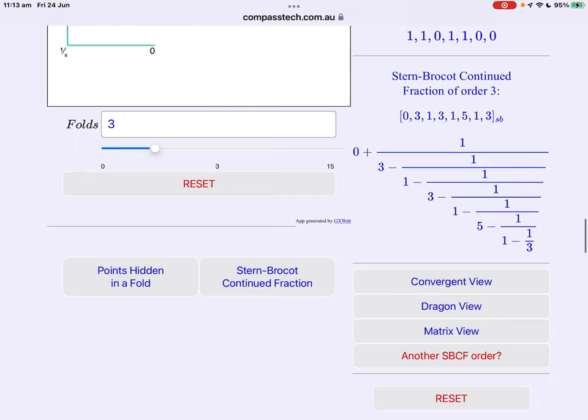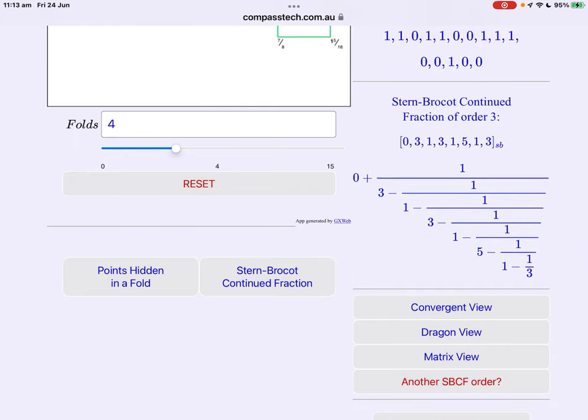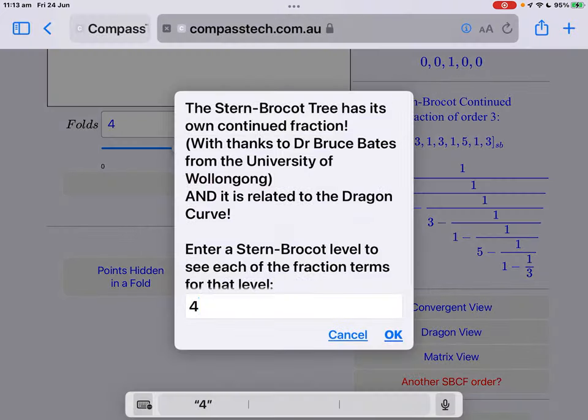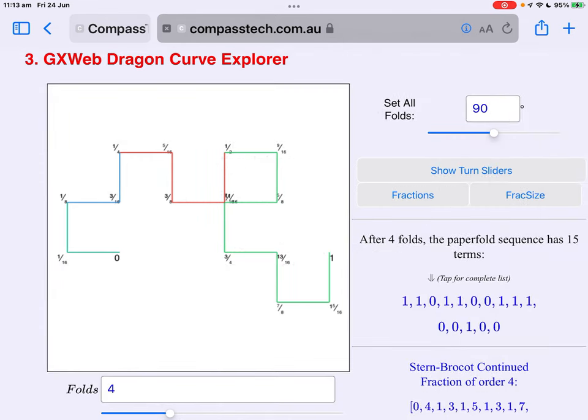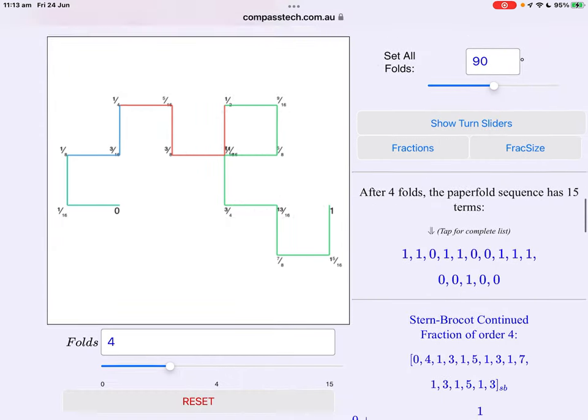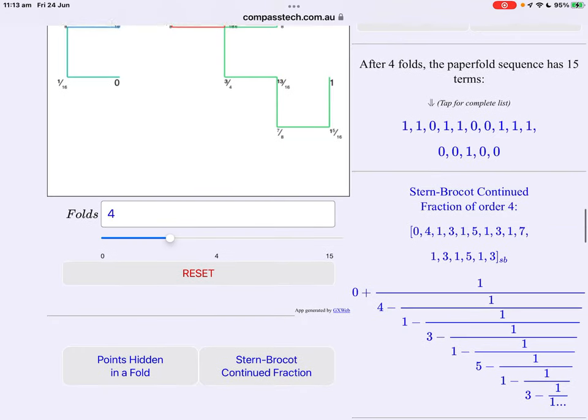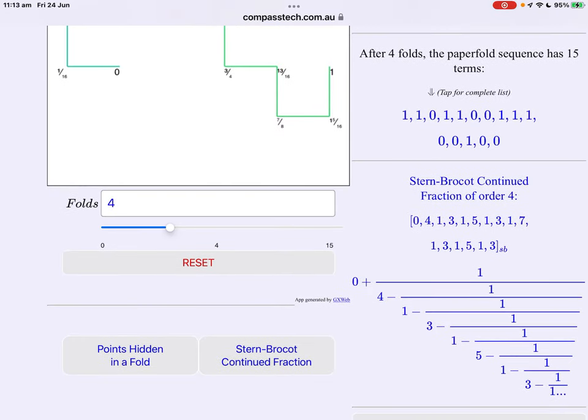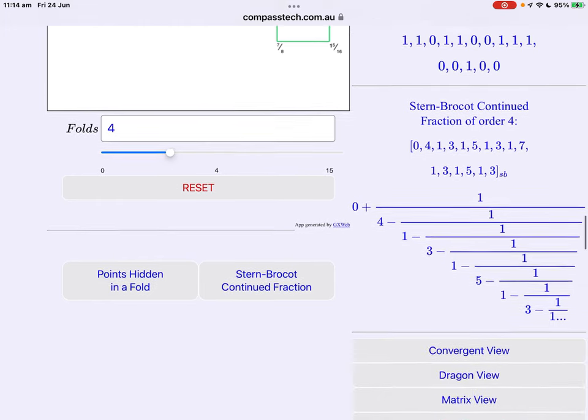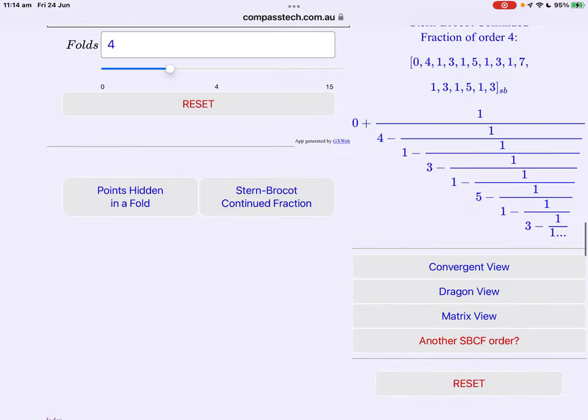Well let's try order four. Now after four folds paper fold sequence has fifteen terms. Look at that sequence, one one zero one one zero zero then three ones two zeros one two zeros. It looks random we know it's not because as we've seen it's just a symmetrical build up of each term.